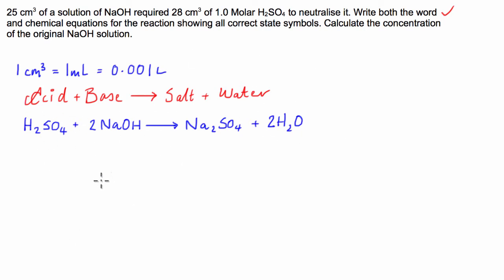Now let's just, we have all the correct state symbols. So let's go about doing that as well. We'll just put them at the base. So we have, this is aqueous, aqueous, aqueous, aqueous and liquid.